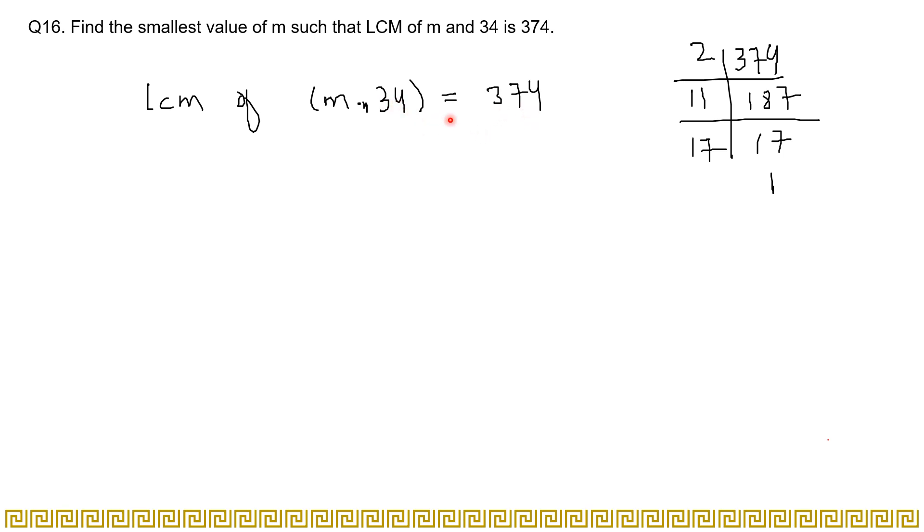So let's try with 2, let's start with 2. If we take m as 2, and the other number is 34, what we are going to do next is we will find the LCM for these two numbers. And it should give us 374. If it doesn't, that means this is not the right value.